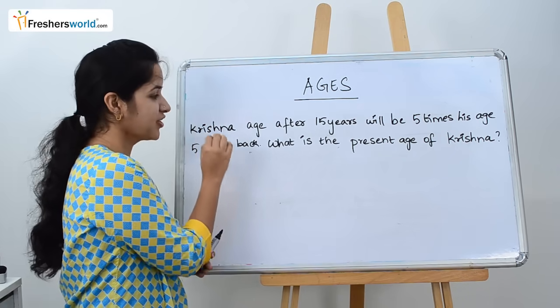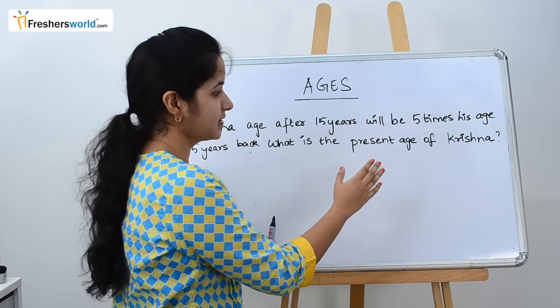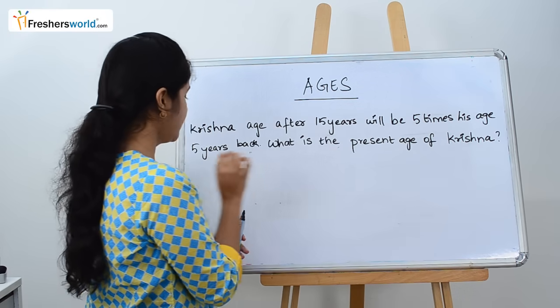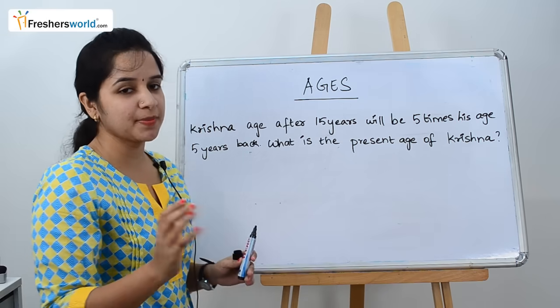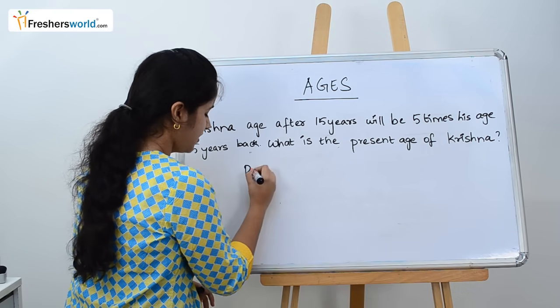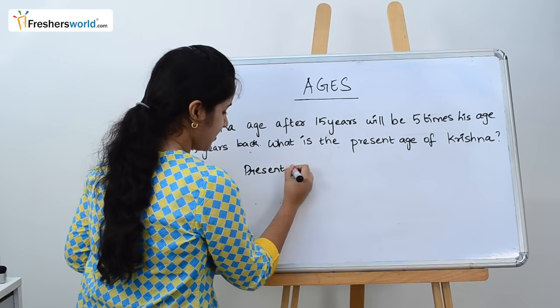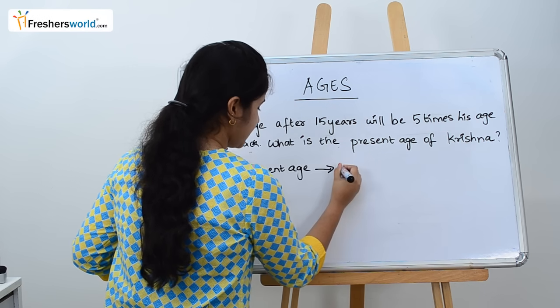The given question is: Krishna's age after 15 years will be 5 times his age 5 years back. What is the present age of Krishna? We know we are going to take the present age as X. Read the question again.